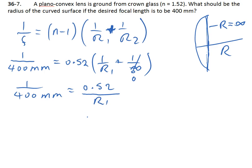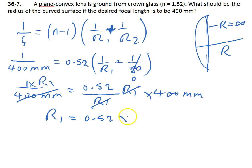So if we multiply both sides by r1, and then multiply both sides by 400 mm, then we're left with r1 is 0.52 times 400 mm, which we can bash into our calculator as r1 is 208 mm.